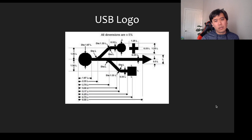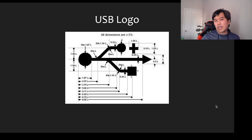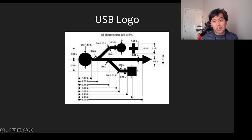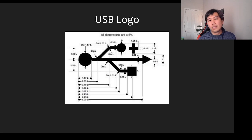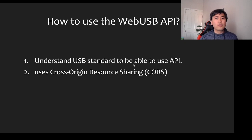The USB logo is patterned after a trident — three stems going to three forks. Notice how the circle, triangle, and square denote different peripherals connecting to your device. They're becoming a standard — an interesting logo.